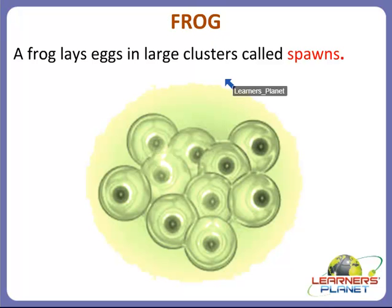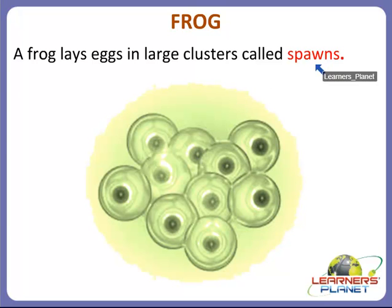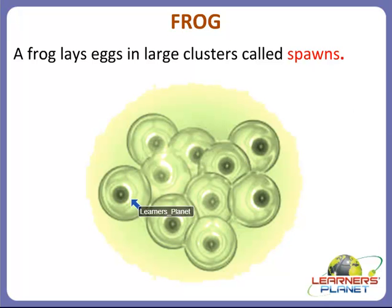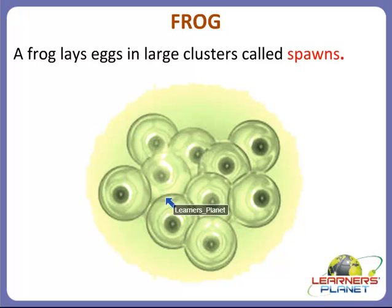A frog lays eggs in large clusters called spawns. So, frog eggs are called spawns. You can see in the picture — these are frog's eggs and they are present in large clusters, and so they are called spawns.